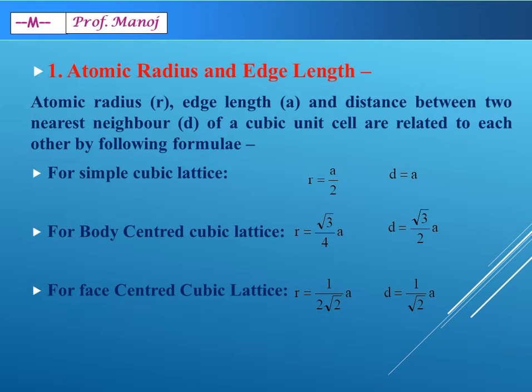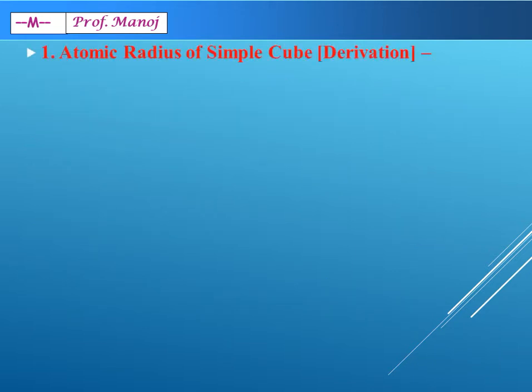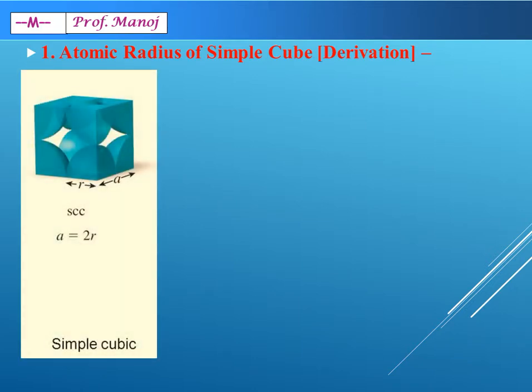We will now shortly derive these relations, especially the first set of relations. First let us see a derivation with respect to different types of lattice. The first we are considering is simple cubic crystal. This particular diagram which we have seen, you can see here, the radius is denoted by r and the edge length of the cube is a. With simple observation, anybody can see that radius 2 times will be equal to edge length. So the formula is edge length equal to 2 into radius, or radius equal to a upon 2.